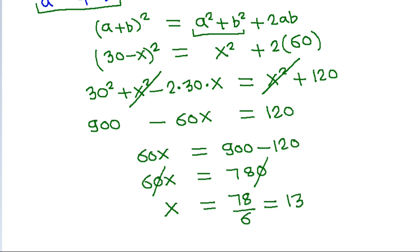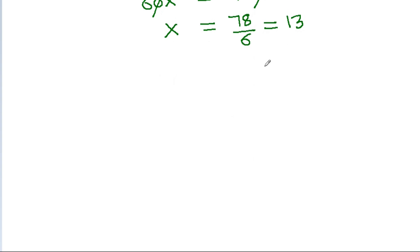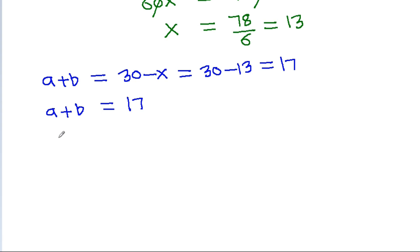We have A plus B equal to 30 minus X, that is 30 minus 13, which equals 17. So A plus B equals 17, and we have AB equal to 60.